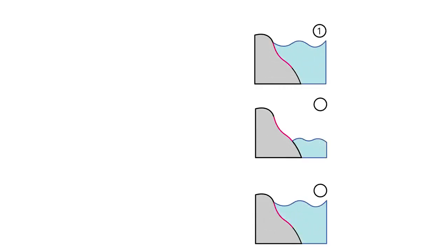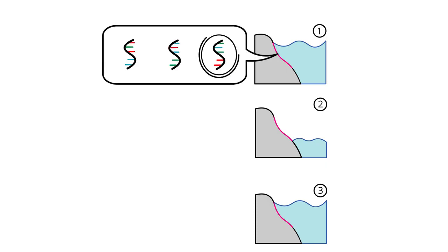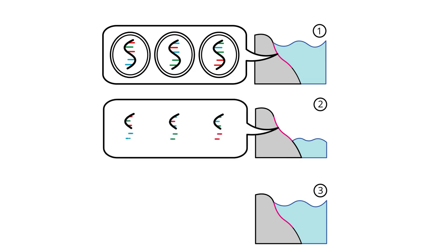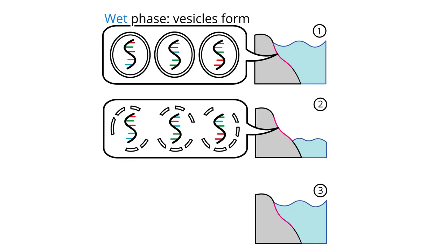The hot springs constantly alternate between wet and dry, supplying the energy required for peptide and DNA bonds to form. Additionally, as the cycle alternates, the vesicles are constantly created and destroyed, much like how soap bubbles form when wet but then get destroyed when dry.